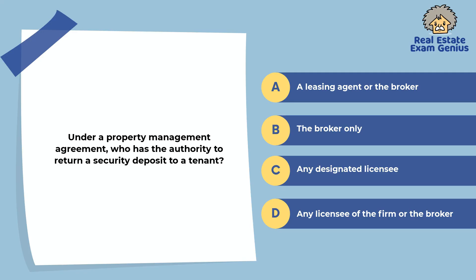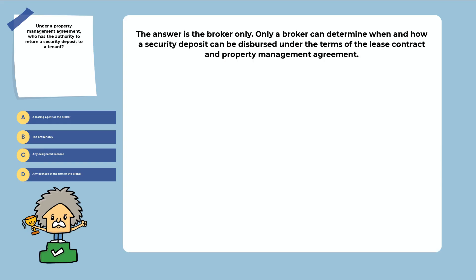Under a property management agreement, who has the authority to return a security deposit to a tenant? A leasing agent or the broker, the broker only, any designated licensee, or any licensee of the firm or the broker. The answer is the broker only. Only a broker can determine when and how a security deposit can be dispersed under the terms of the lease contract and property management agreement.